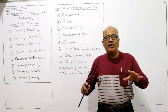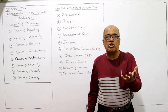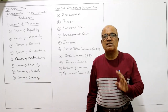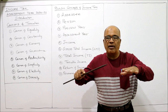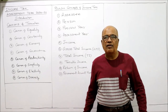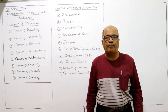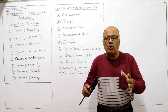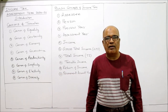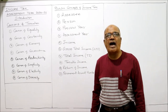The last canon is the canon of diversity, which means we should not have too many taxes as that creates complications. Only a few taxes should be there. That is the reason why GST was implemented — removing all the different types of indirect taxes and replacing them with a single tax, GST. Diversity means: don't impose a large number of taxes; only a few should be implemented.